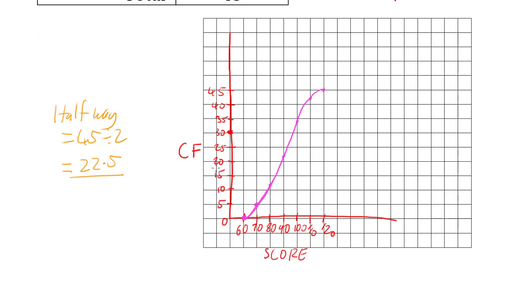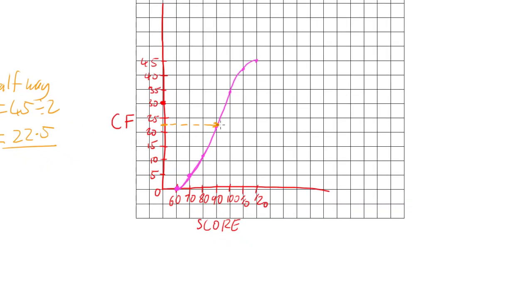So we find 22.5, which is there. And we go across until we meet our graph. And then, once we've met our graph, we can then map that down to a score.